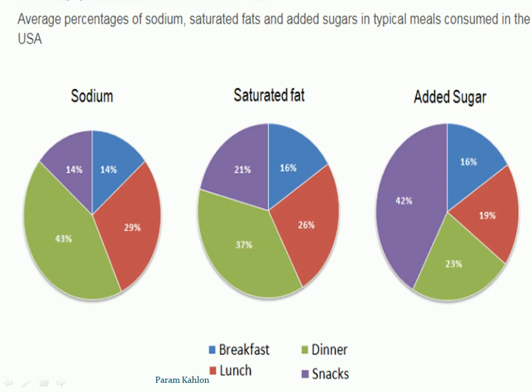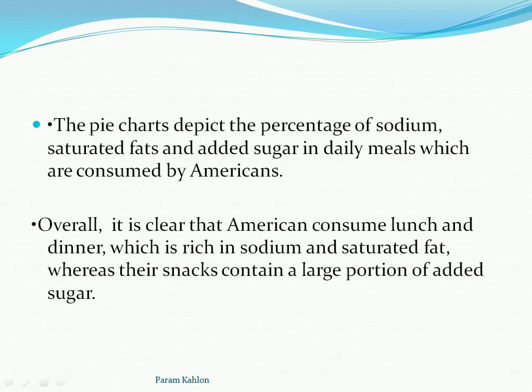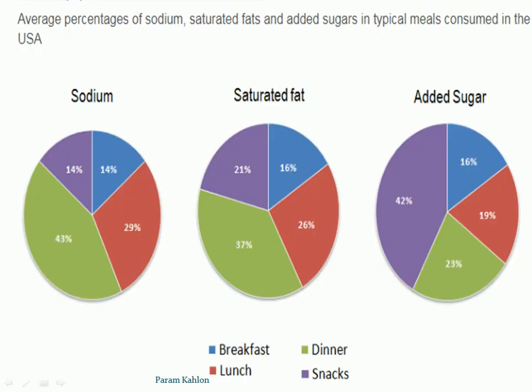We have three pie charts showing sodium, saturated fat, and added sugar — depicting the percentage of these nutrients in the daily meals of Americans, including lunch, dinner, breakfast, and snacks. Overall, it is clear that Americans consume the most sodium and saturated fat during lunch and dinner, whereas snacks contain the largest proportion of added sugar.